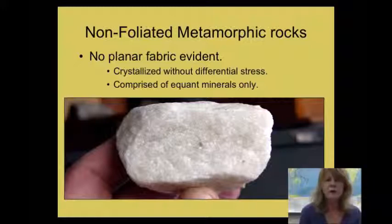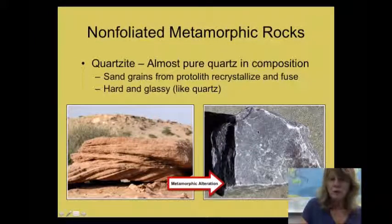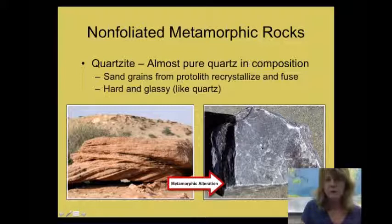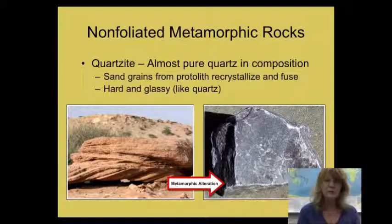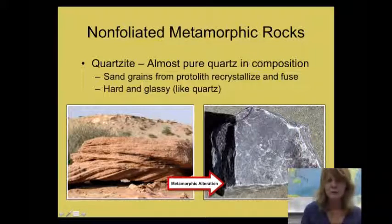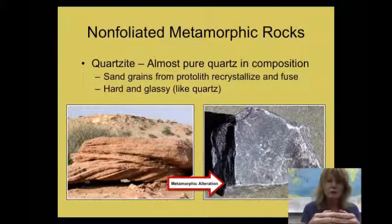Some metamorphic rocks are not foliated — either because there's no differential directed stress, or the minerals are roughly equal in shape. Here is an example of a non-foliated metamorphic rock called quartzite. The color is not a reliable indicator — quartzite can be grayish, white, or many other colors, and it sometimes exhibits layering that is a sedimentary artifact. Quartzite forms when a quartz-rich rock like a quartz sandstone is buried so that the quartz grains recrystallize and grow into each other, producing a different texture.